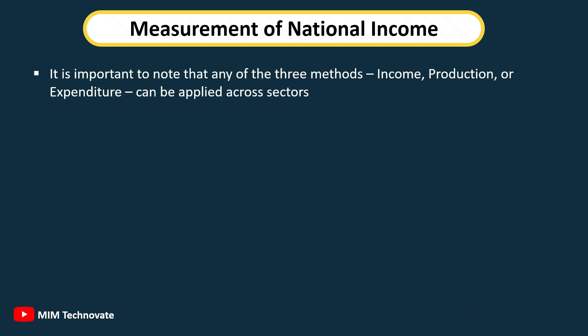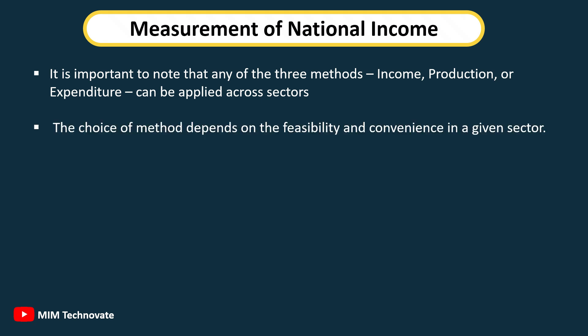It is important to note that any of the three methods — Income, Production, or Expenditure — can be applied across sectors. The choice of method depends on the feasibility and convenience in a given sector.